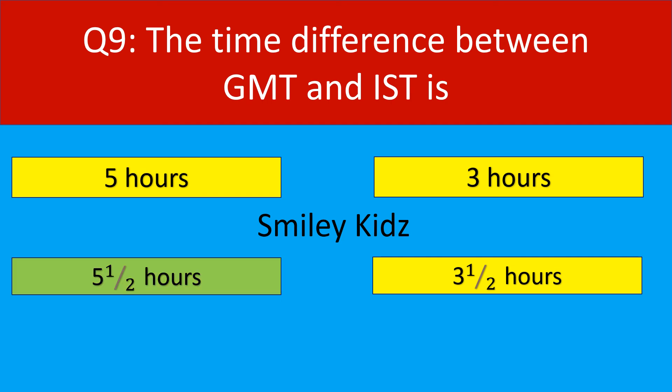The correct answer is 5 and a half hours. The time difference between GMT and IST is 5 and a half hours.